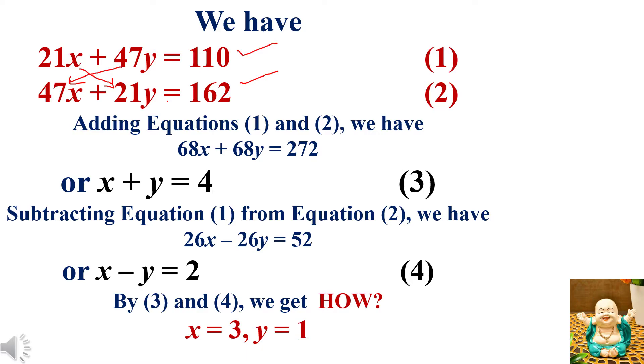A special thing in this case is when we add these two equations, first and second, then 21 plus 47 becomes 68, 47 plus 21 again 68. Now 110 plus 162 is 272. When we add, we take common 68 from the left-hand side and cancel out 272 divided by 68, which is 4. So the third equation we get is x plus y equals 4, equation number 3.